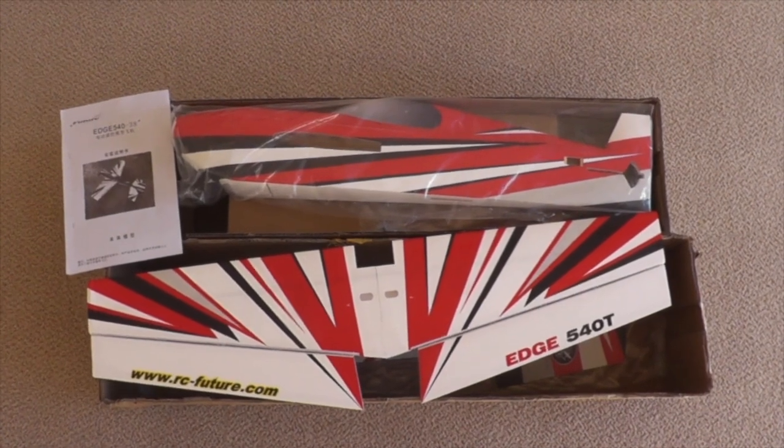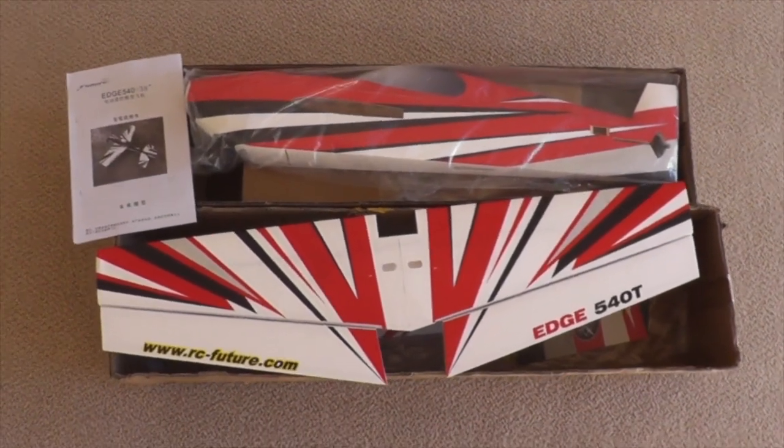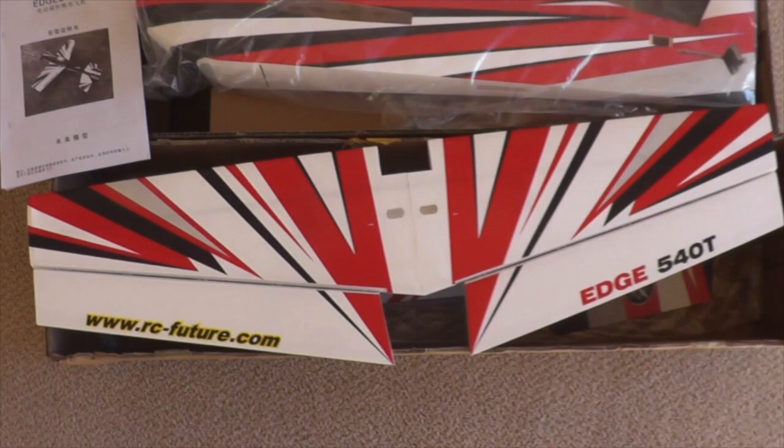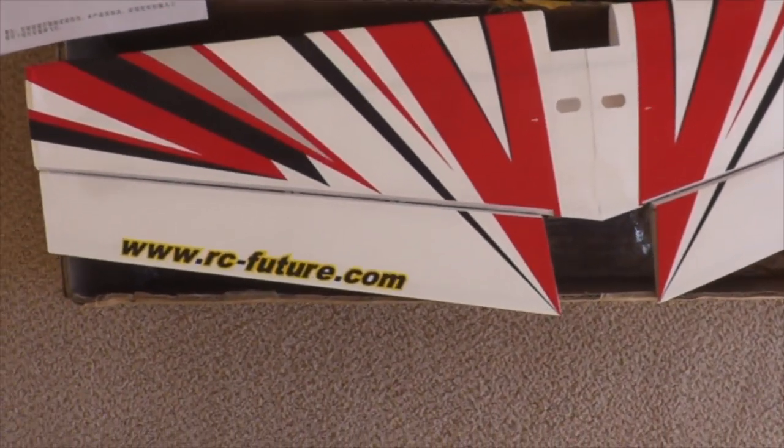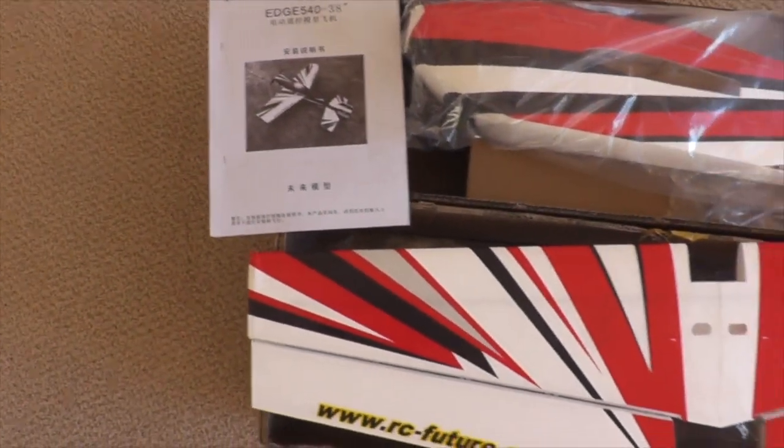This just arrived on the porch, it's the Future Model Edge 540T, and it's a different type of hybrid. It actually has a polypropylene skin material on it. So let's have a look at it.